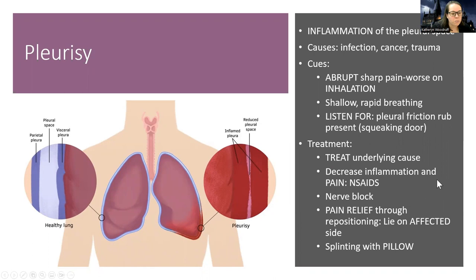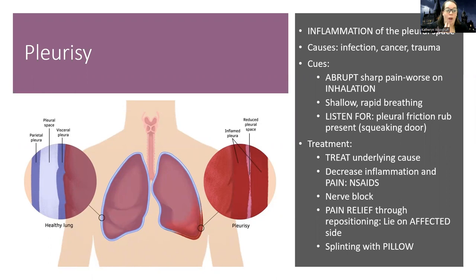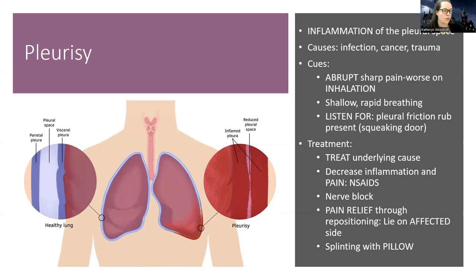Pleurisy is inflammation in the pleural space. It can be a result of infection, but also cancer, trauma, or other causes. It leads to really abrupt, sharp pain, and the patient will complain of worse pain when taking a deep breath. You may notice they're breathing very shallow or rapidly. When you listen, you'll hear a squeaking door sound called a pleural friction rub. Treatment is to address the underlying cause — treat infection, modify cancer treatments like radiation if needed, or fix trauma. We decrease inflammation and pain with NSAIDs; some patients are so uncomfortable they may need a nerve block.